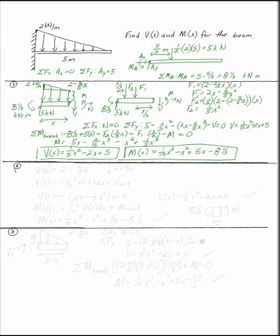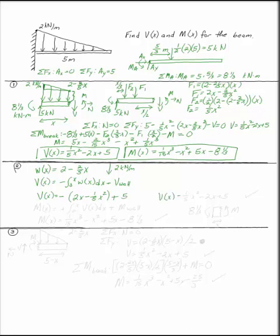Obviously if you were doing this just to get the answer, you can stop there. But I'm going to continue with the other methods. If you don't like trapezoids, you can integrate instead — it might even be easier. W(X) is the distributed load acting downward, equal to two minus two-fifths X. At X equals zero, W is two kilonewtons per meter down at the wall, which checks out. V(X) is the negative integral from zero to X of W(X) dx plus V at the wall: integrating gives minus (two X minus one-fifth X squared) plus five, so V(X) equals one-fifth X squared minus two X plus five — which is what we had before.